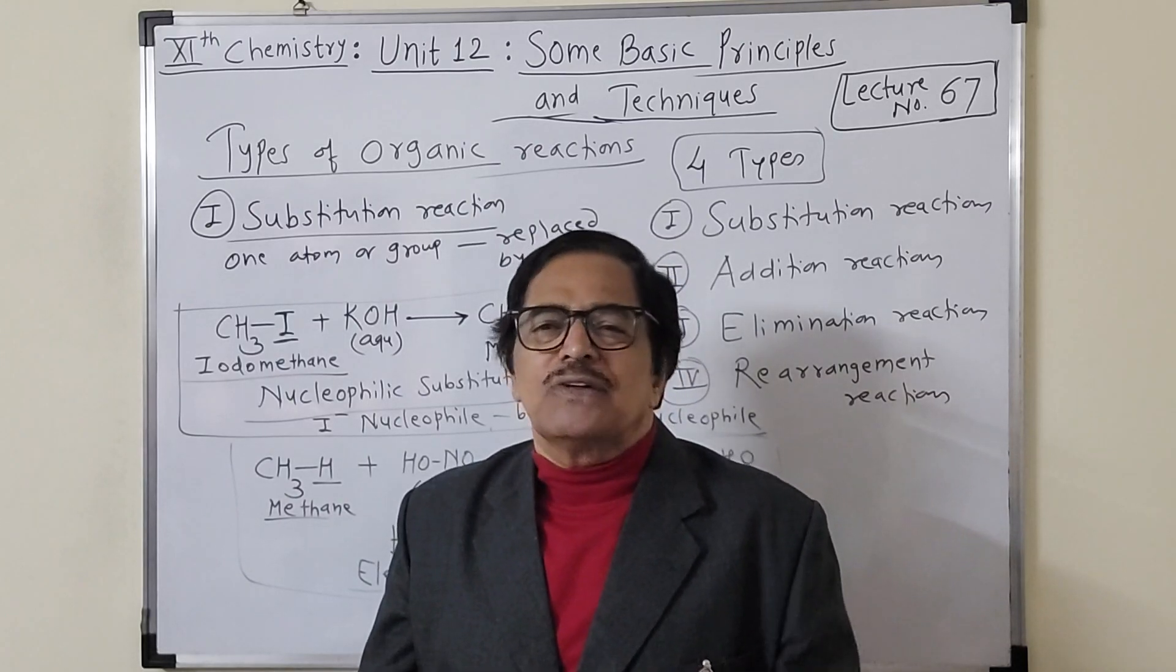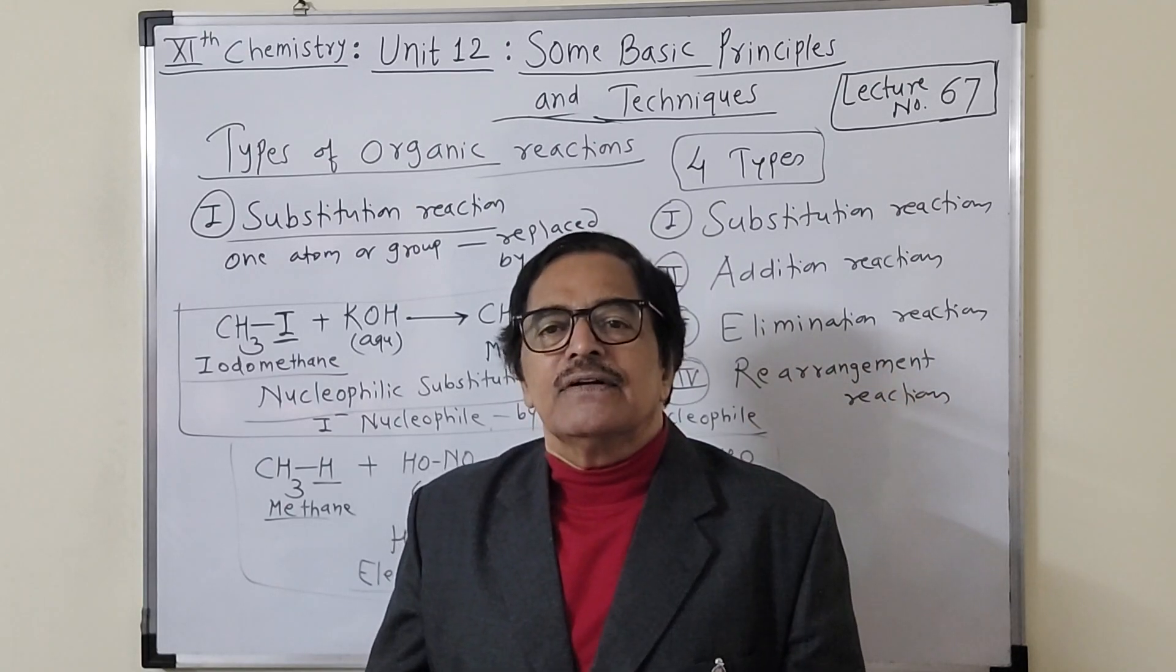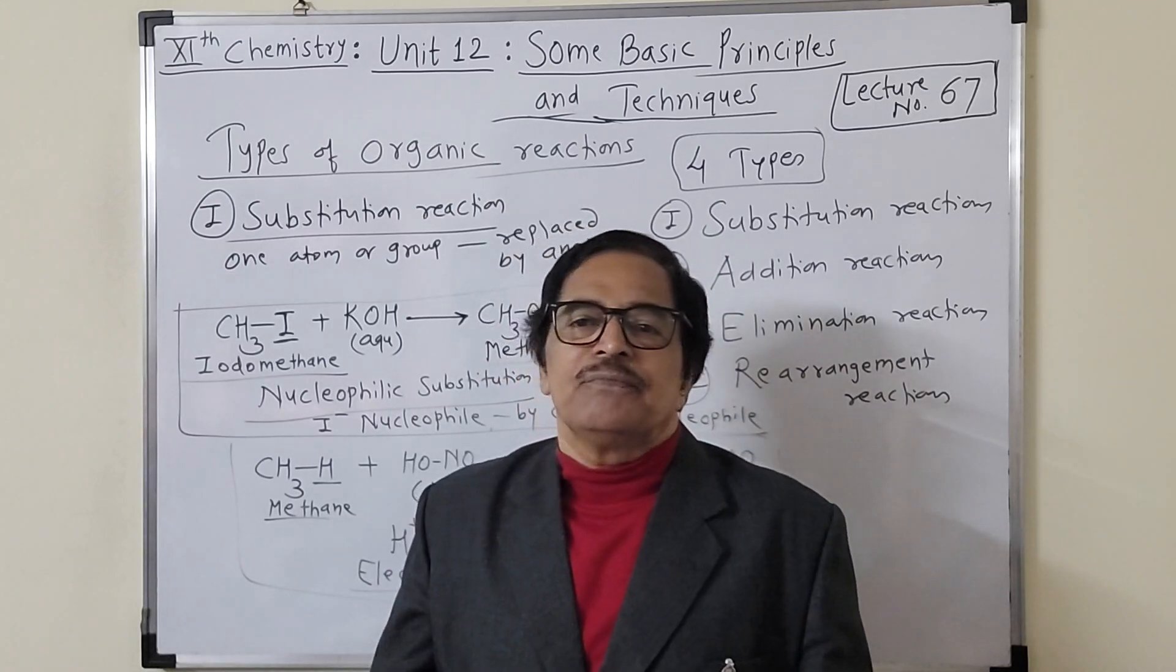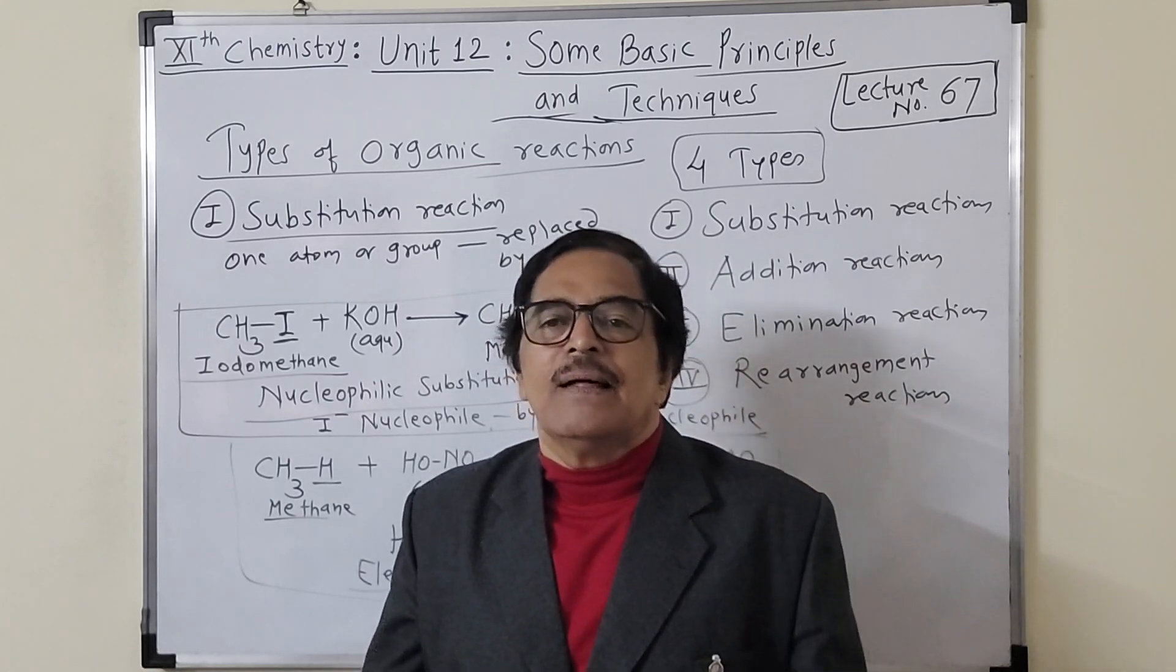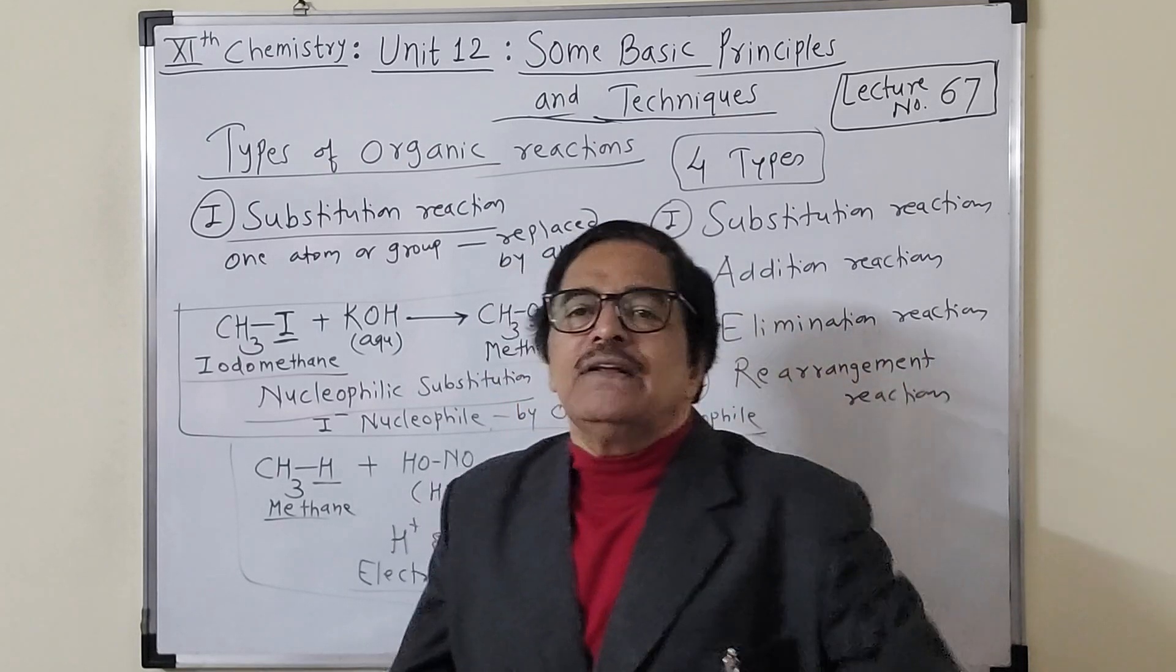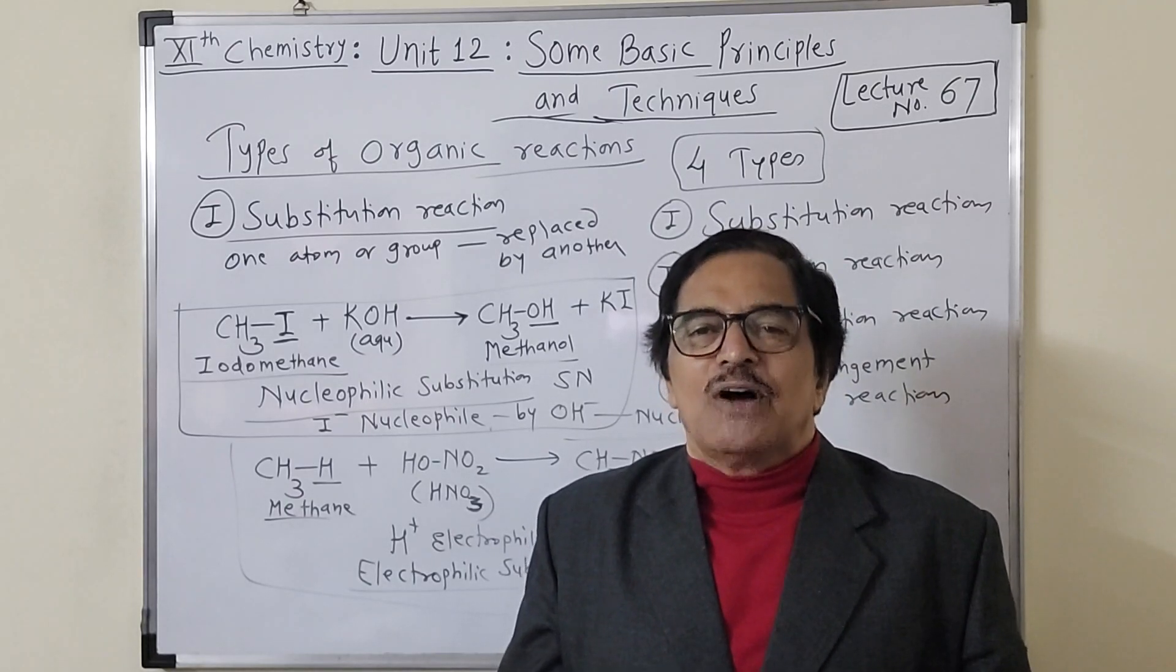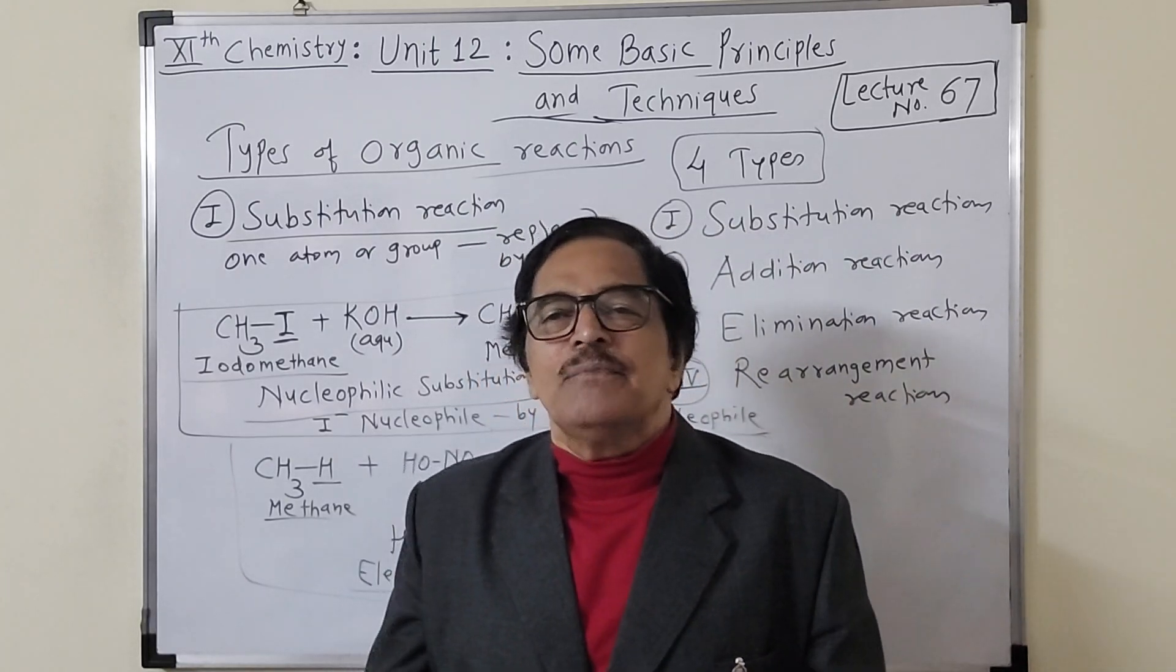We also have free radical substitution reaction and ionic substitution reaction. If a free radical is formed as intermediate and the reaction occurs by free radical mechanism, it is called free radical substitution. But if an ion is formed as intermediate, it is called ionic substitution reaction. I am confident you must have understood this first type, substitution reaction.